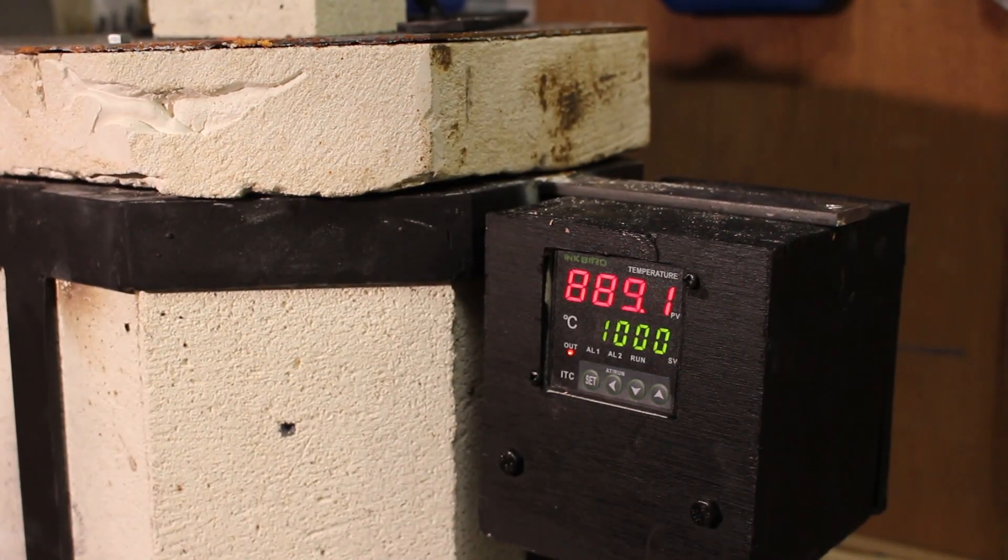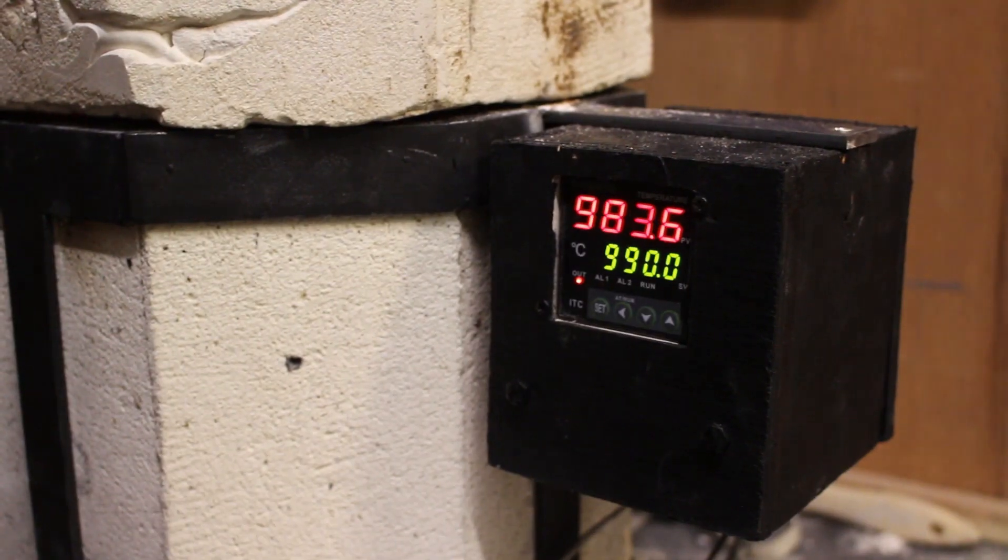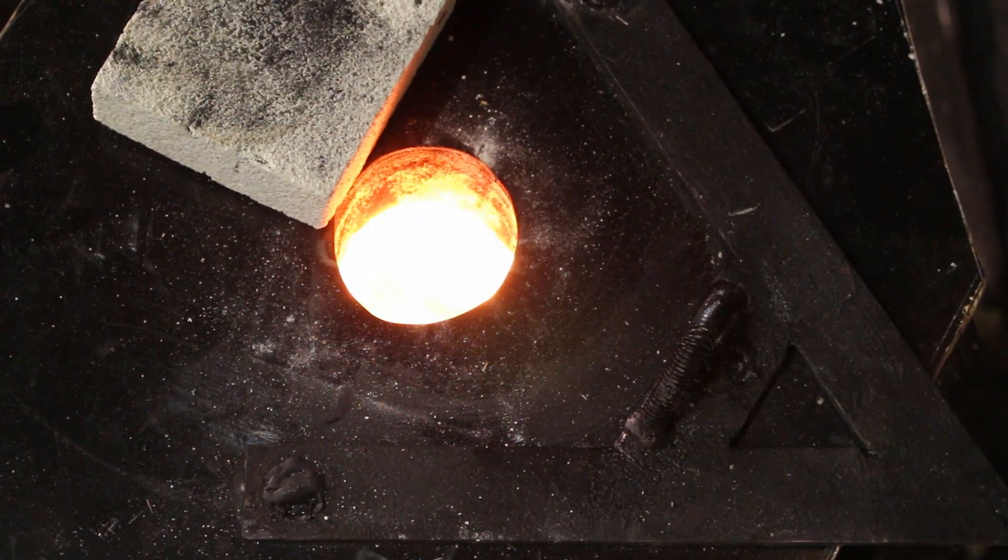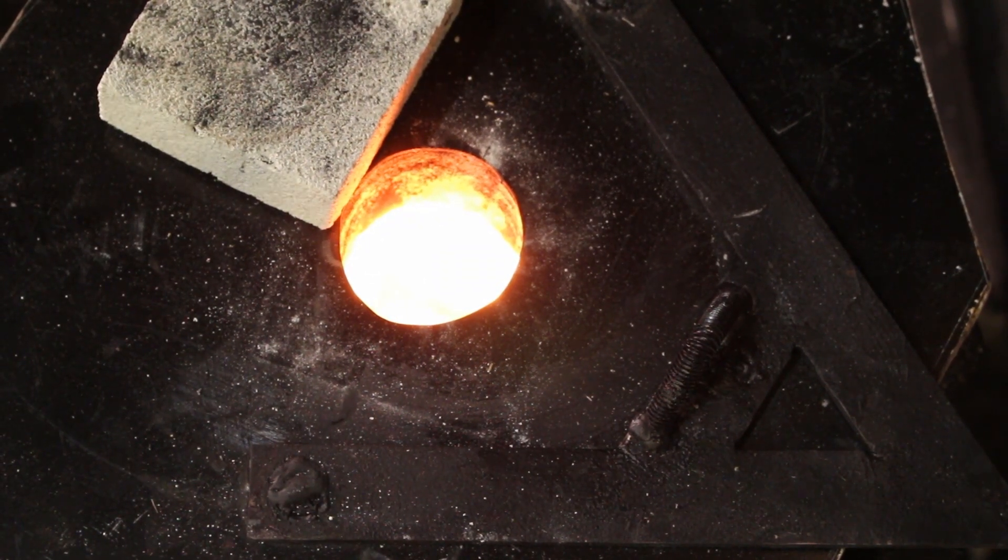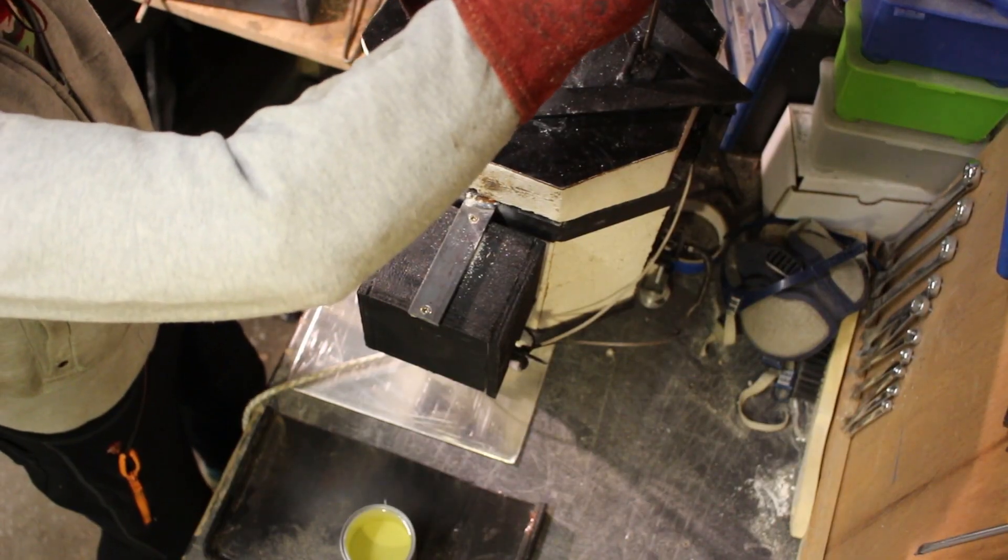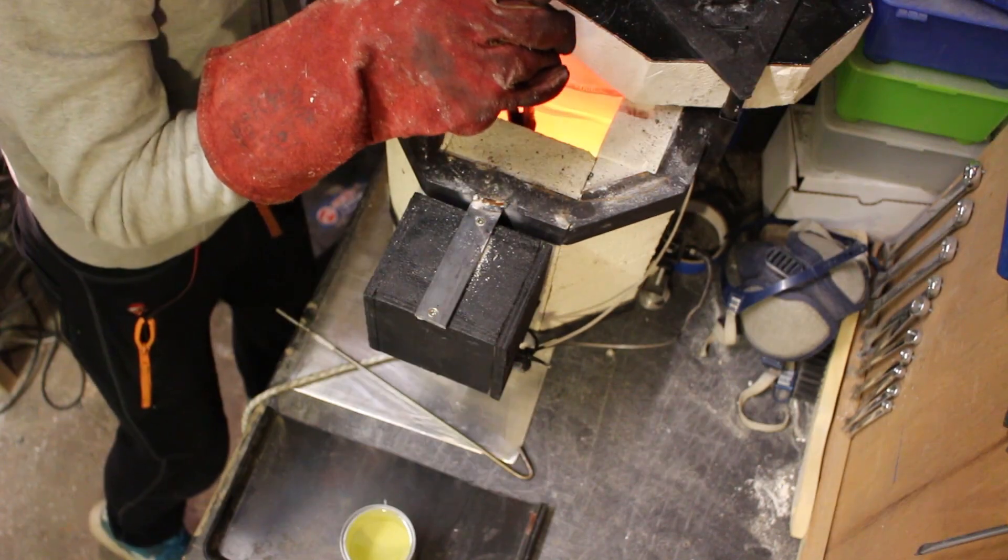Now it's time for the heat treatment and I set my electric foundry to 1000 degrees celsius this time, which is pretty much the lowest temperature that you can heat treat high speed steel at. But I didn't really want to take my electric foundry any higher because I didn't want to risk burning out the coils. I turned off the foundry as to not electrocute or burn myself and then pulled out the knife with tongs and then plunged the blade tip first into some oil.